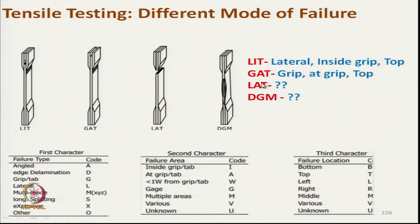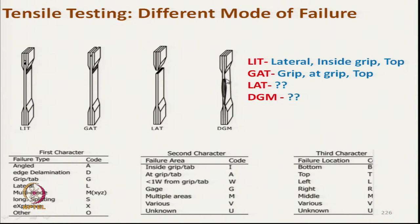GAT means G = grip (failure at the grip point, not between the jaws), A = at grip area, T = at the top grip — indicating a problem with the top jaw, so this result should also be rejected. LAT means lateral failure, A = at grip, T = at top.